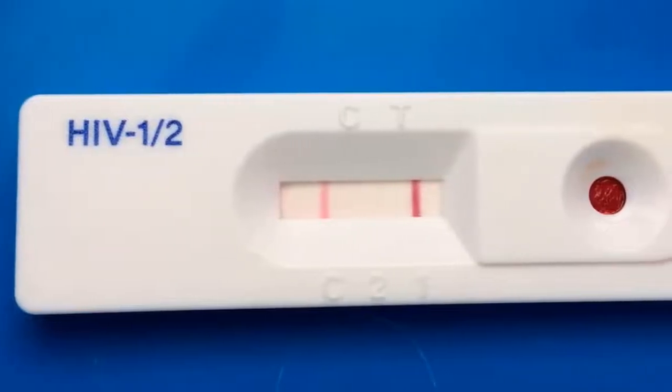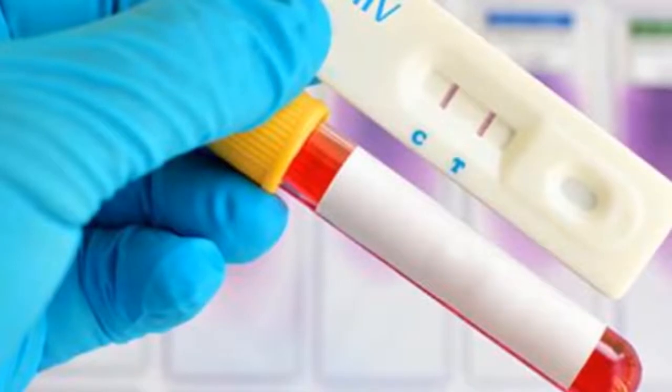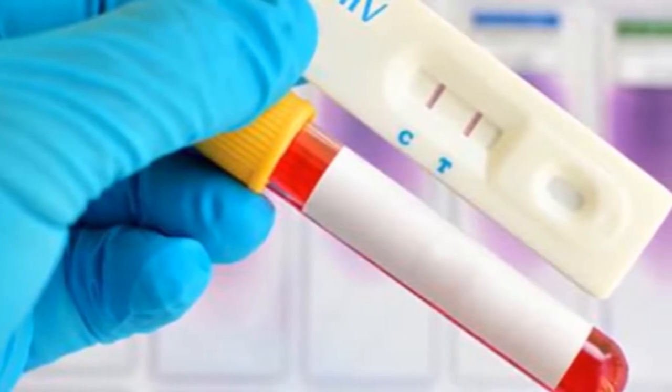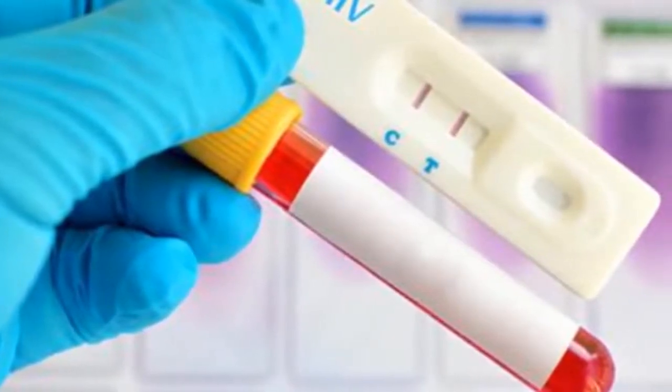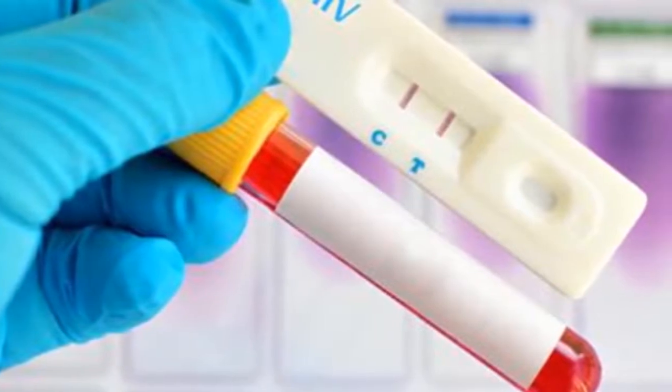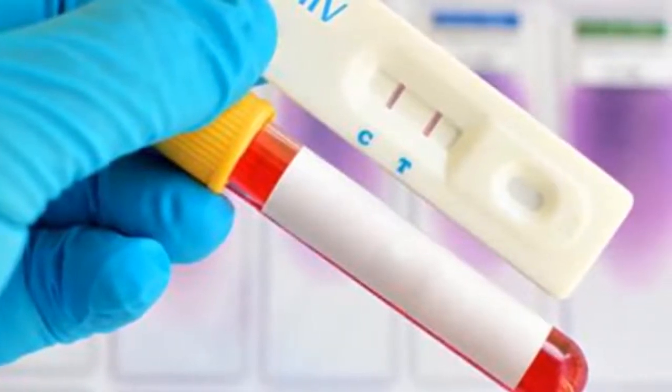Point 4: 4th generation HIV testing kits are close to 100% accurate from 8 weeks to 3 months. Point 5: Also, all HIV testing methods like antibody rapid tests, HIV RNA test, and 4th generation kits are conclusive at 3 months.